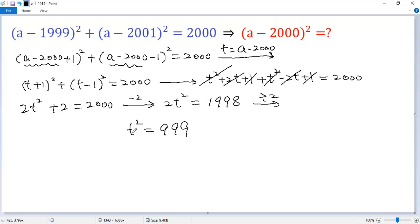t squared is actually the target. a minus 2000 squared equals t squared. So the final answer would be 999.